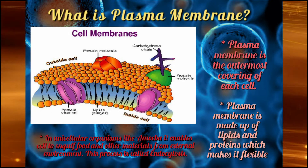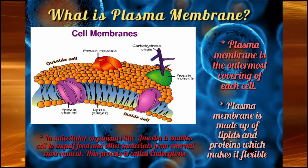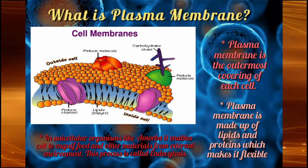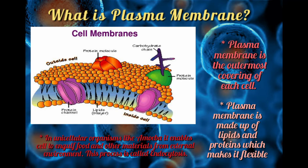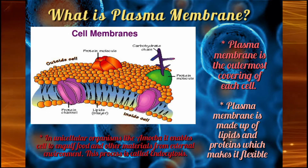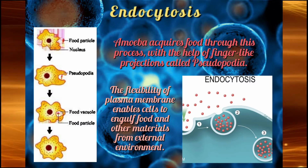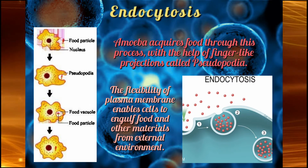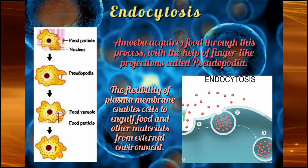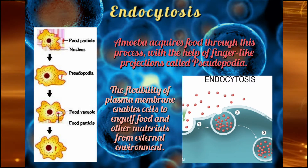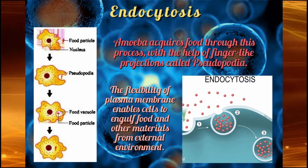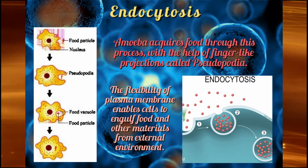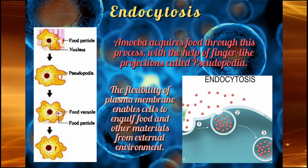Plasma membrane is made up of lipids and proteins. Because of the proteins and lipids present in it, it is flexible. For example, in unicellular organisms like Amoeba, it enables the cell to engulf food and other materials from the external environment. This process is called endocytosis. Amoeba plasma membrane ki madad se food capture karta hai. Is process ko endocytosis kehte hai.